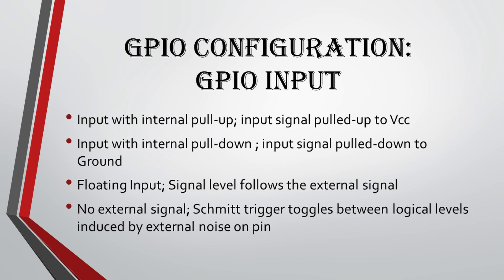Like GPIO output, GPIO input has similar settings. GPIO input can be set as input with internal pull-up, input with internal pull-down, or the input can be left floating. With internal pull-up, the input signal is pulled up to VCC. When internal pull-down is active, the input signal is pulled down to ground. When the input is left floating, the signal level follows the external signal, and when no external signal is connected, the trigger in the controller toggles between logic levels induced by external noise on the pin.